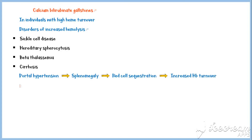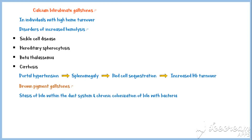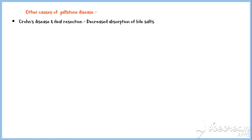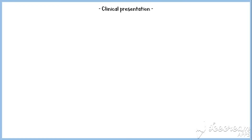For brown pigment stones to form, there should be stasis of bile within the duct system along with chronic colonization of bacteria. Common conditions favoring the formation of brown pigment gallstones include postoperative biliary stricture, choledochal cyst, and liver fluke infestation. Other causes of gallstone disease include Crohn's disease and ileal resection, which decrease the absorption of bile salts, burns, paralysis, prolonged ICU care, and major trauma.